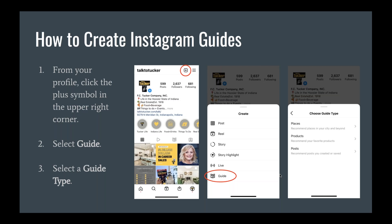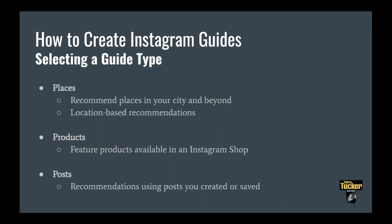After you select Guide, you're going to select a guide type. You have three different options: Places, Products, and Posts. Let's talk a little bit about what each of those are and which option to go with.